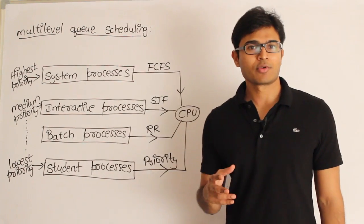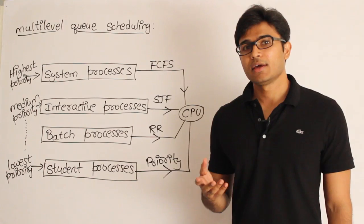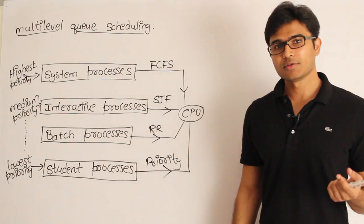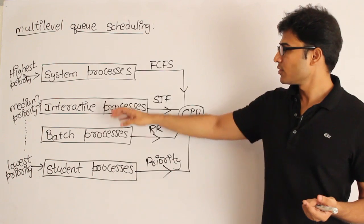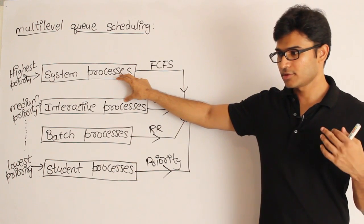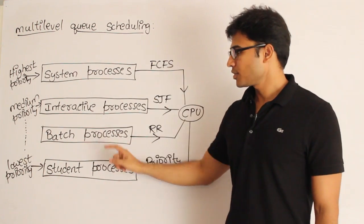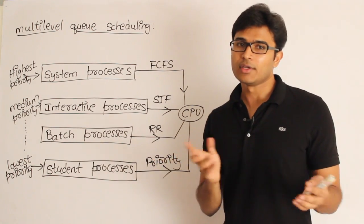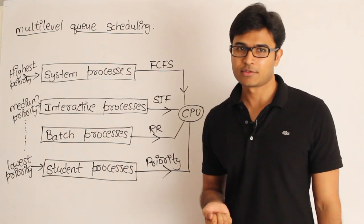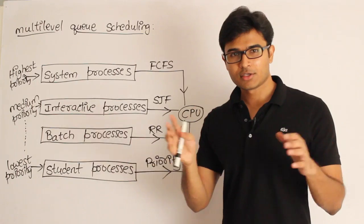Having one queue and scheduling all processes is really difficult because there are various types of processes in the computer. The operating system itself has some processes to run — programs belonging to the OS are called system processes. There are also interactive processes, such as when you're playing an online game or listening to music. Batch processes are when you submit lots of jobs and come back later for results. Student processes are normal programs that students might execute.